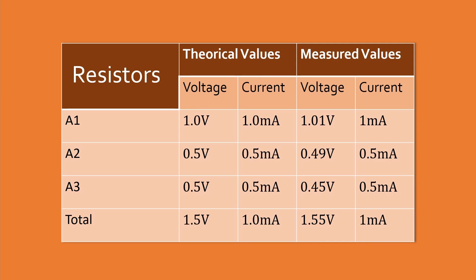This is the table that records the theoretical value and the measured value. As you can see, the measured values are slightly different from the theoretical values. This is due to the resistance of the three resistors not being exactly 1k ohm. So now let us measure the actual values for the three resistors.